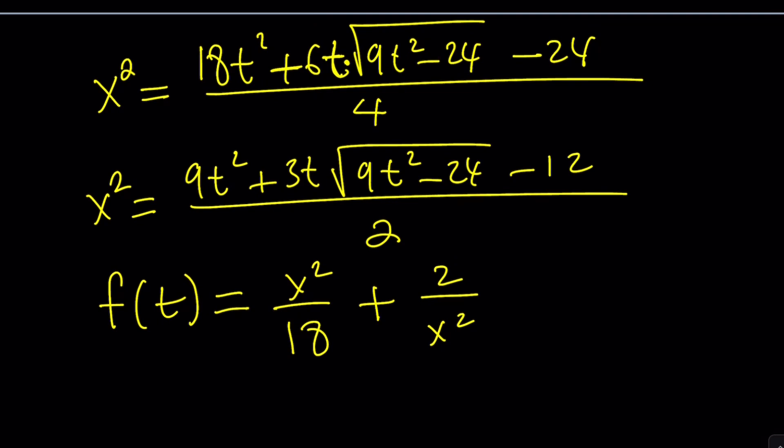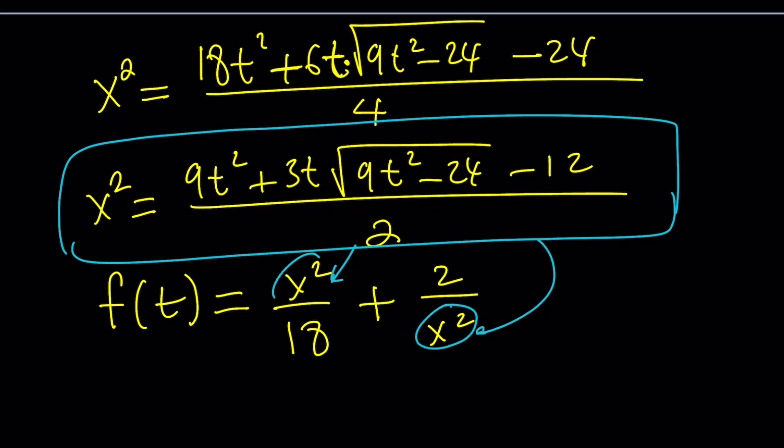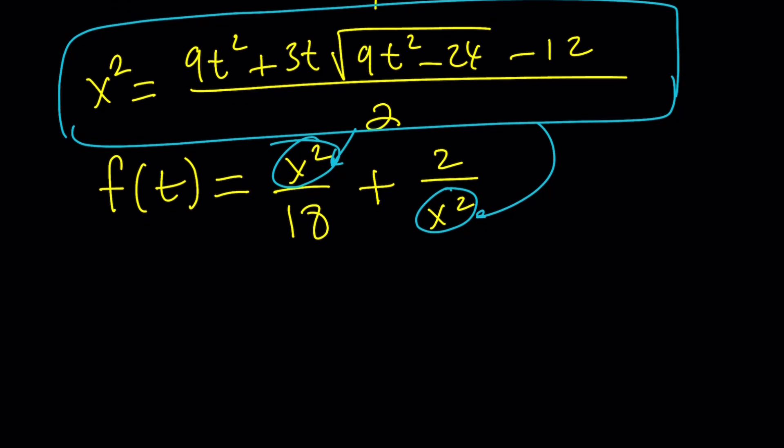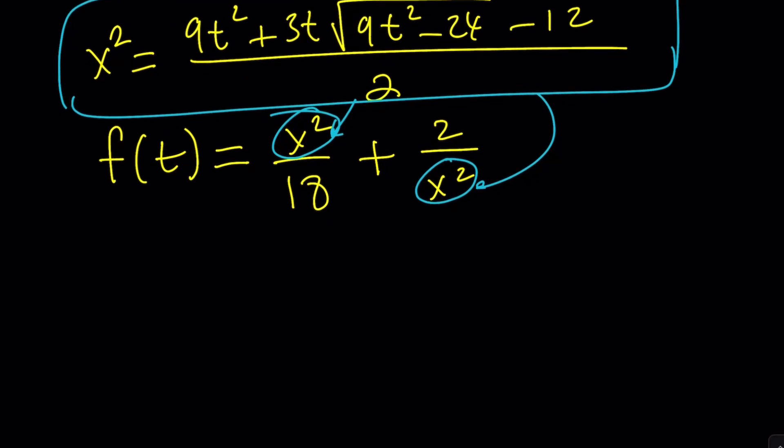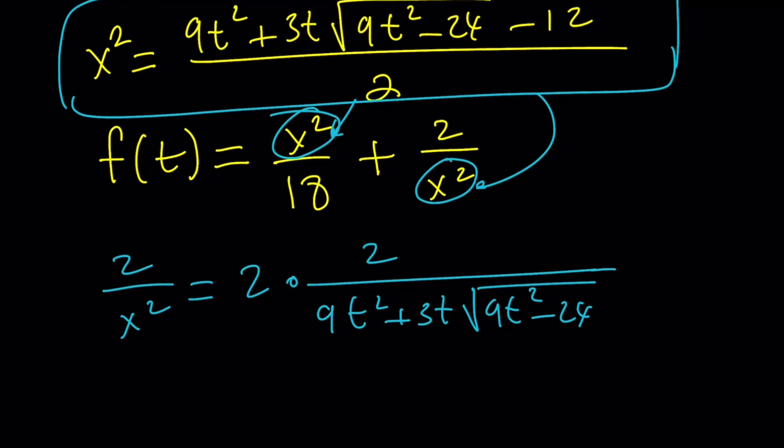Now, here's what we should do. Take this x squared and plug it in here and here, right? That's what we have. That's going to be a lot of work, isn't it? But here's the thing. I need to divide by 18, so I might as well just do it separately. And then I need to divide 2 by this. So let's go ahead and do that first. That looks a little more complicated.